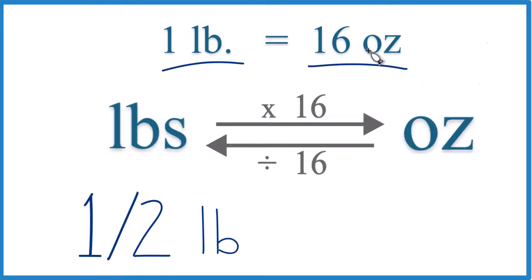So if one pound equals 16 ounces, half a pound is gonna be half of 16. Eight ounces.